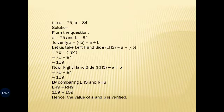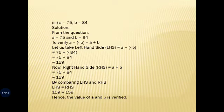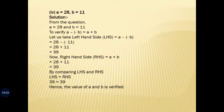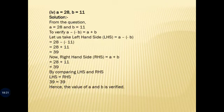Third case: a = 75 and b = 84. LHS: 75 minus (minus 84) = 75 plus 84 = 159. RHS: 75 plus 84 = 159. LHS equals RHS, hence verified. Fourth case: a = 28 and b = 11. LHS: 28 minus (minus 11) = 28 plus 11 = 39. RHS: 28 plus 11 = 39. Both LHS and RHS are equal, hence verified. Thank you everyone.